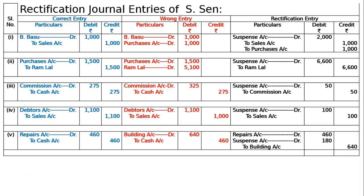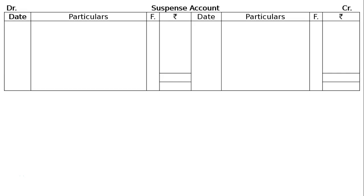The total of the rectification entry will be debit Rs.9390 and credit Rs.9390. This is all about our answer. After totaling this rectification entry, we will be preparing the suspense account on the next page.